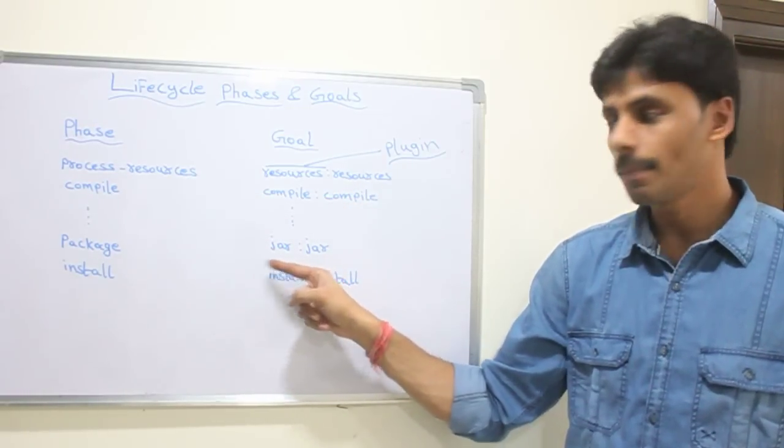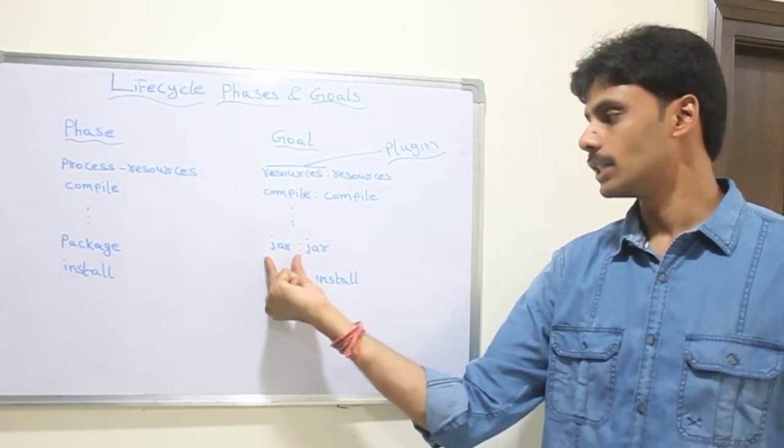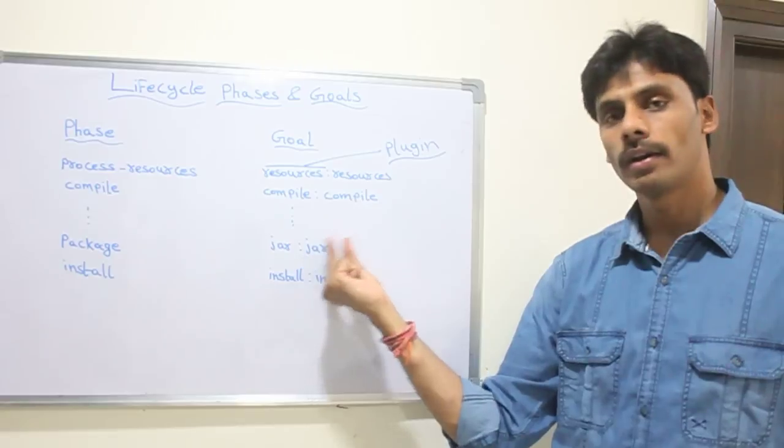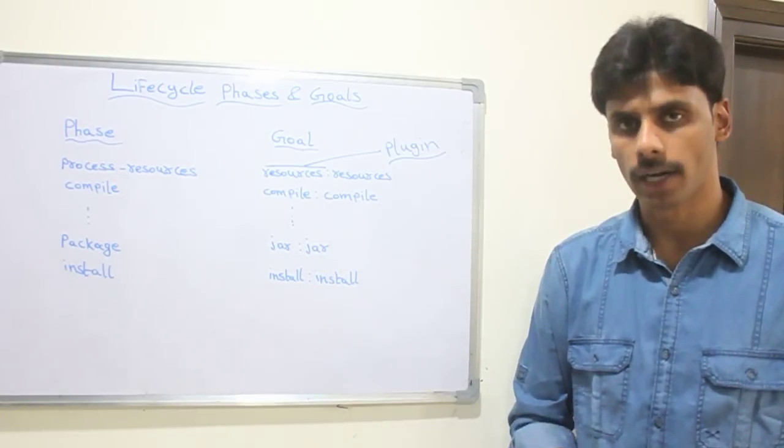Again there is another example for package. Jar colon jar is bound to the package lifecycle phase. Wherein jar is the plugin and colon on the right side we have the actual goal or task that does the actual work.